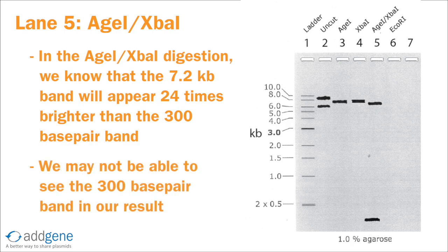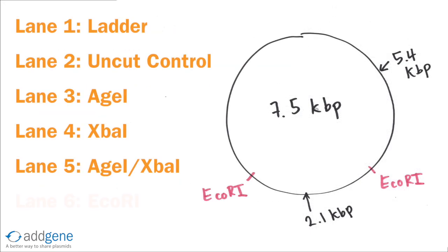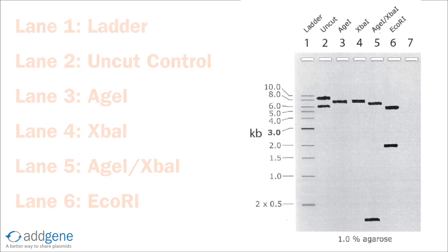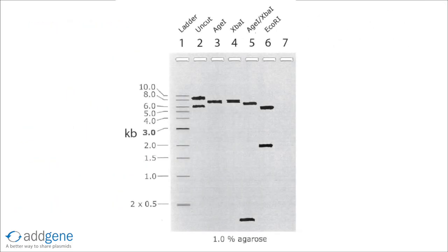This means that if we don't have a bright enough 7.2 kb band, we might not even see the 300 base pair band. Lane 6 is the EcoRI digest. EcoRI cuts in two places, so we expect two products: a 5.4 kb band and a 2.1 kb band. This picture looks complete. Let's run our experiment and see our results. Run your gel long enough to get good separation of the bands — don't rush it.